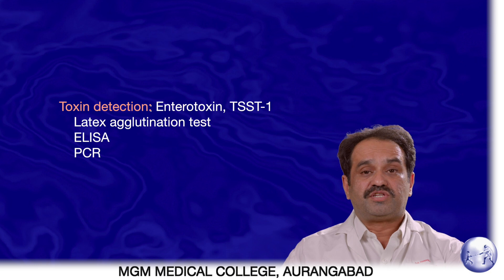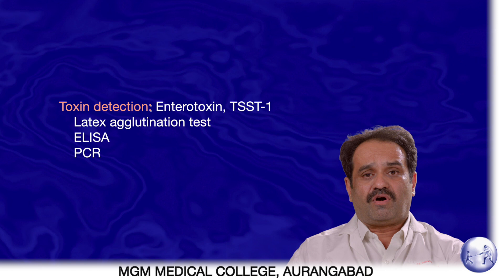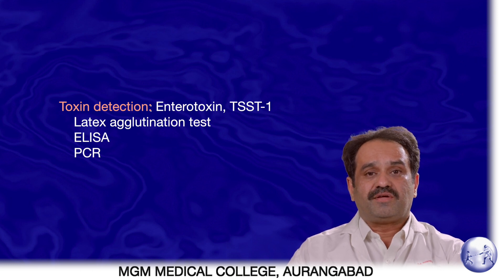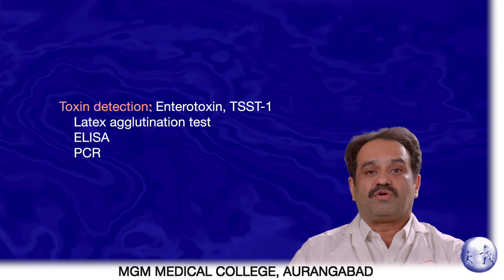For detection of toxins — the enterotoxin and TSST-1 of Staphylococcus aureus — the tests employed are latex agglutination, ELISA, and PCR, with PCR detecting the genes responsible for toxin production.